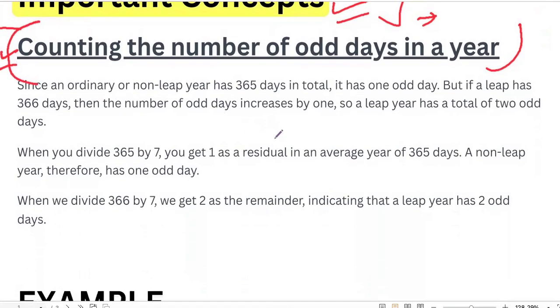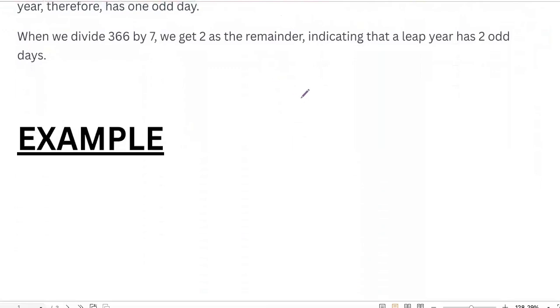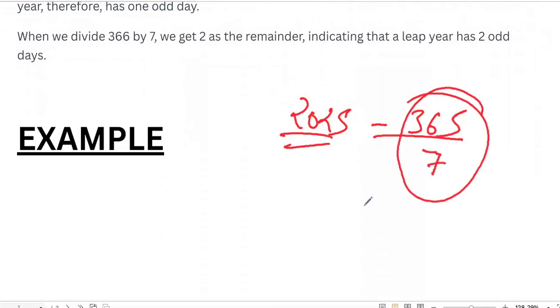In an ordinary year, ordinary year means non-leap year, just say like 2025, we have 365 days. When we divide 365 days by 7, we do get 52 weeks plus 1 odd day.